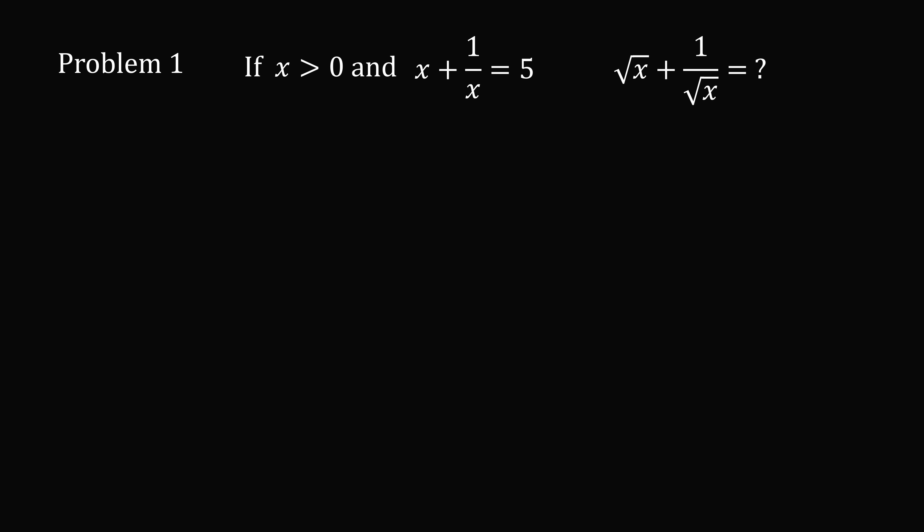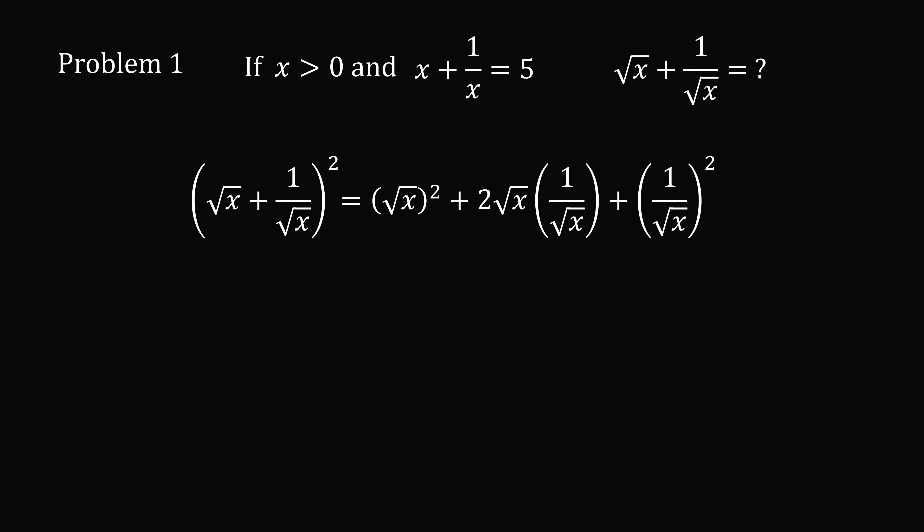So let's solve Problem 1. We'll get started by taking the square of the square root of x plus 1 over square root of x. If we expand this out, we get the square of root x, plus 2 times root x multiplied by 1 over root x, plus the square of 1 over root x. In this middle term, the square root of x multiplied by 1 over square root of x will cancel out to be 1.